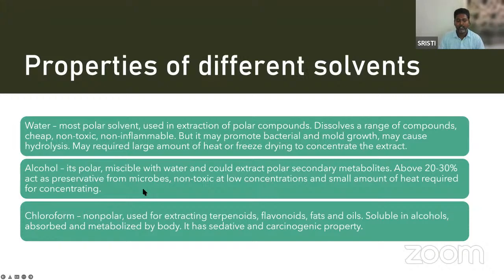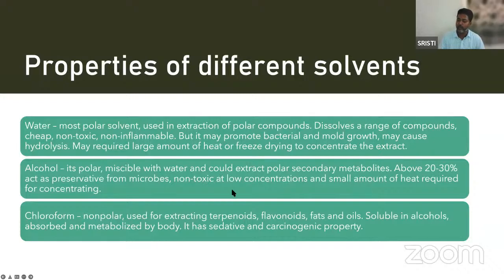Alcohol is polar and miscible with water. It extracts polar secondary metabolites. Concentration is about 20 to 30 percent. It also acts as a preservative from microbes, so you don't have microbial contamination in alcoholic extracts. At low concentration it is non-toxic, and you only need a small amount of heat for concentrating the extract.